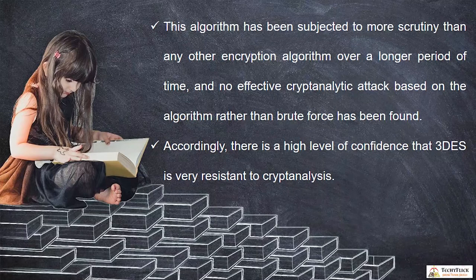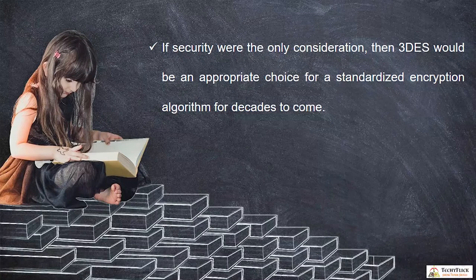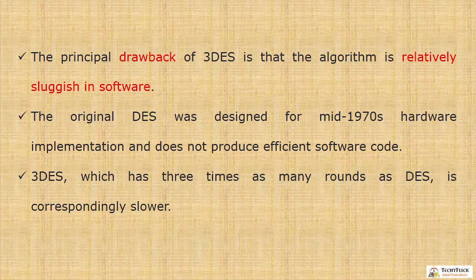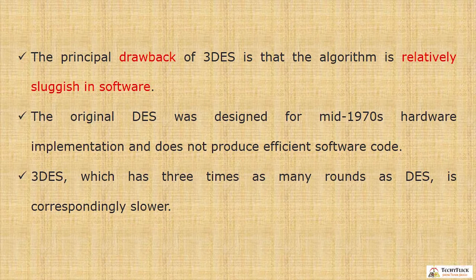No effective cryptanalytic attack based on the algorithm rather than brute force has been found. Accordingly, there is a high level of confidence that Triple DES is very resistant to cryptanalysis. If security were the only consideration, Triple DES would be an appropriate choice for decades to come. The principal drawback of Triple DES is that the algorithm is relatively sluggish — very slow in software. The original DES was designed for mid-1970s hardware implementation and does not produce efficient software code.